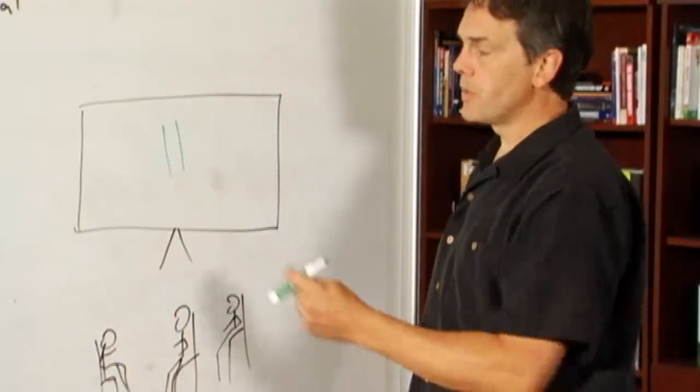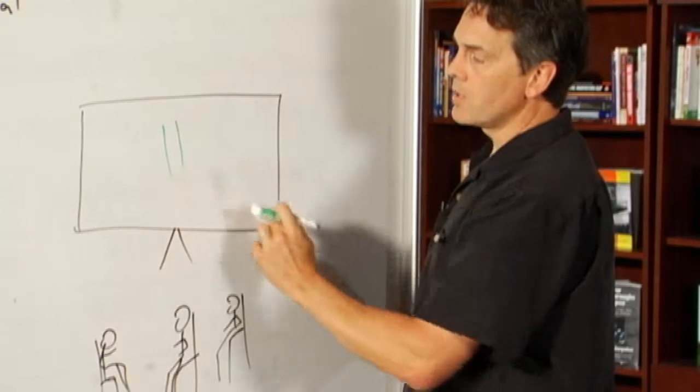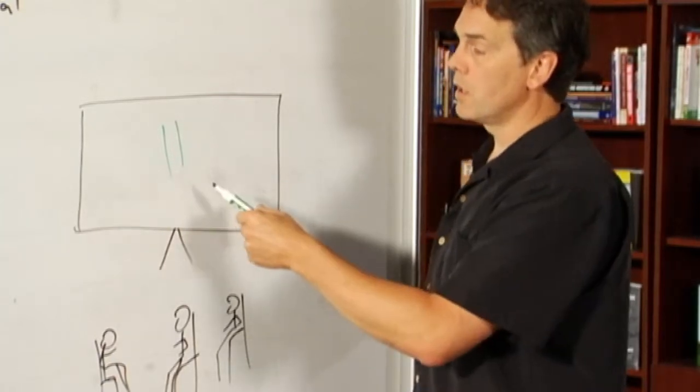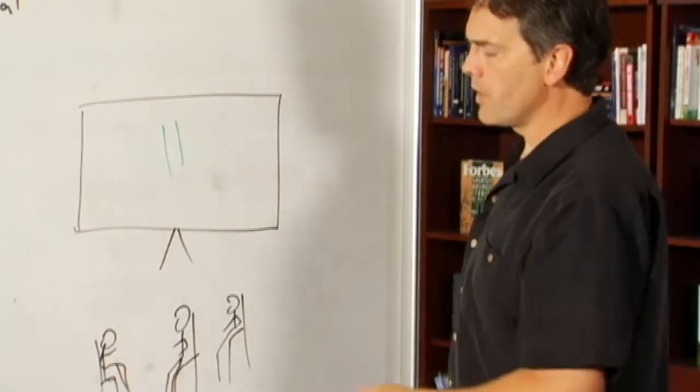Now you can start playing around with this person. You start making these lines deliberately different. One is obviously shorter than the other.